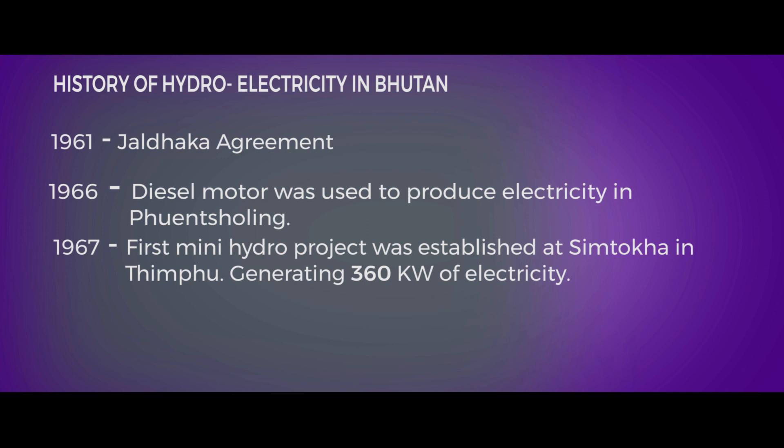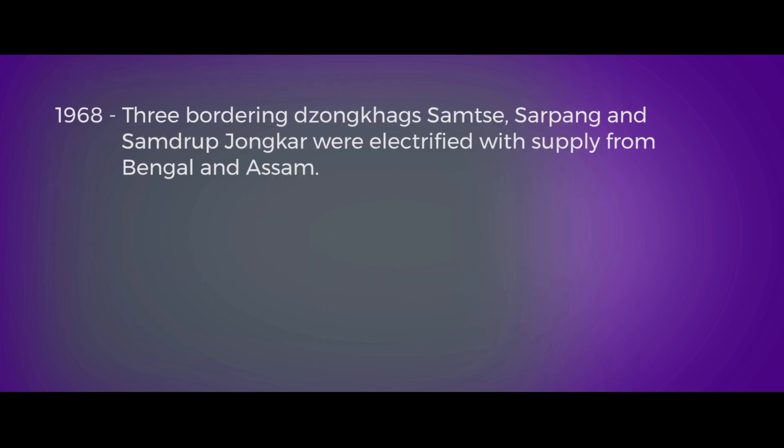Please remember, it is just 360 kilowatts, not megawatt. In 1968, the bordering towns of Samtse, Sarpang, and Samdrup Jongkhar were electrified by importing electricity from Bengal and Assam.